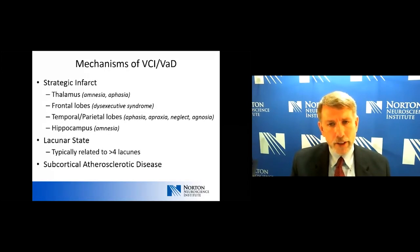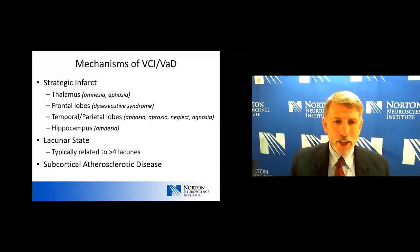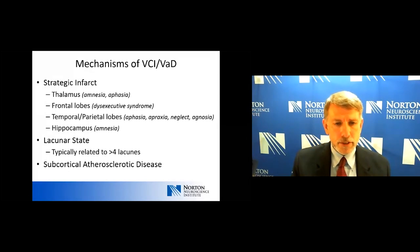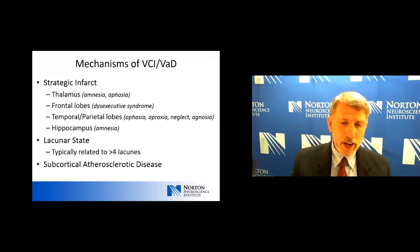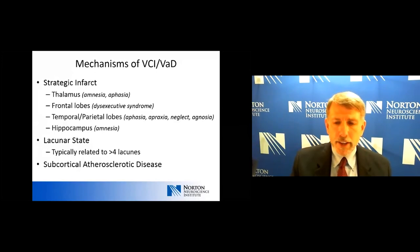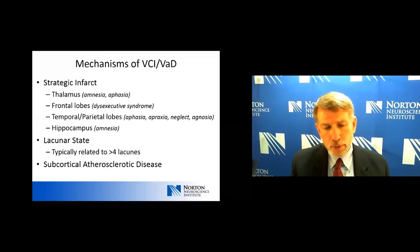We can get to vascular cognitive impairment or vascular dementia in a couple of different ways. We can have a strategic infarct — in this case it's all about location. For example, a stroke affecting the thalamus may cause amnesia or aphasia; a stroke affecting the frontal lobes may affect executive function; affecting temporal or parietal lobes may cause aphasia, apraxia, neglect syndrome, or agnosia; affecting the hippocampus will again cause amnesia or a problem with learning and memory. But the latter two mechanisms are probably more important.